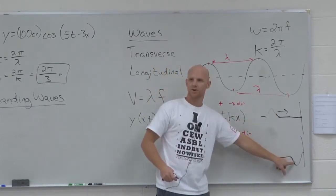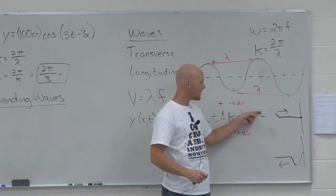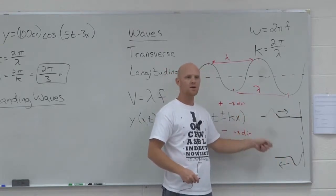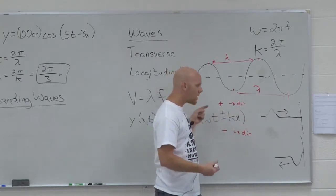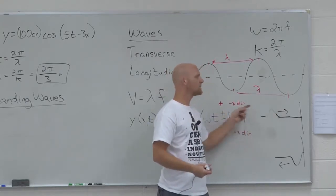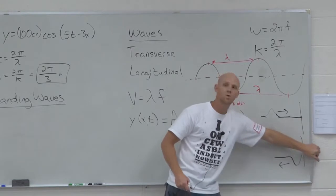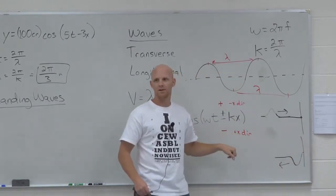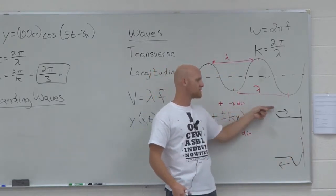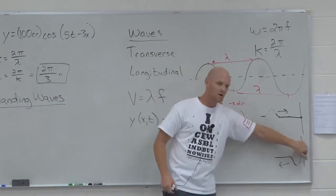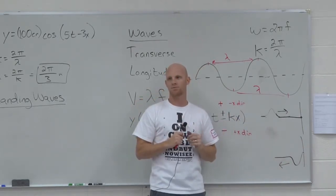Eventually that wave is going to invert. But as long as I keep wiggling it, once that wave starts traveling down, I'm still wiggling — I create another wave. So I'm all the time creating new waves that are traveling this way. In the meantime, there are more waves that are traveling back. And so at some point I'm going to have a wave traveling this way and a wave traveling back that might overlap in some way, shape, or form.